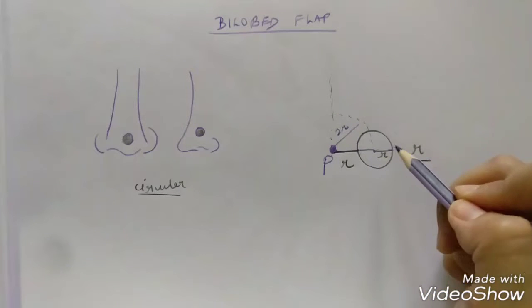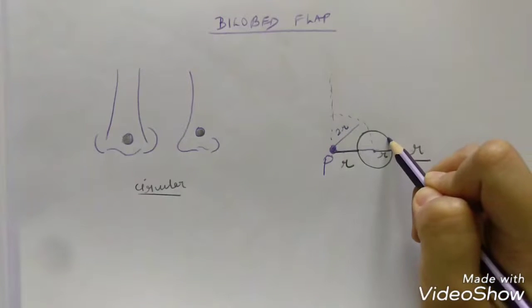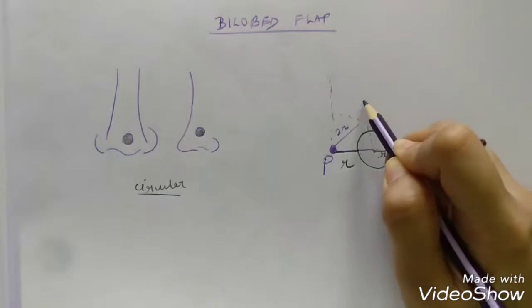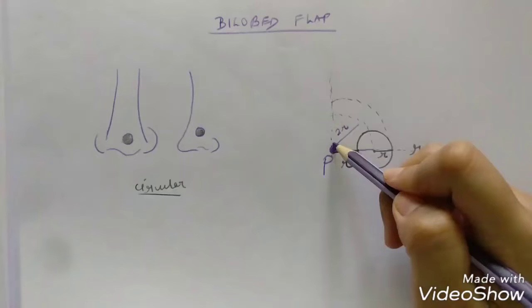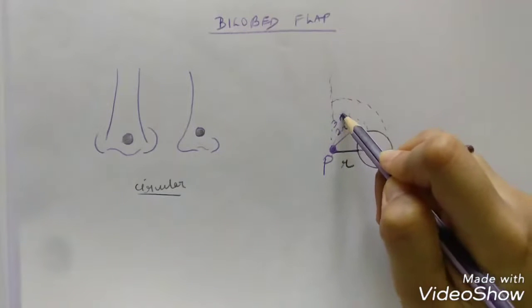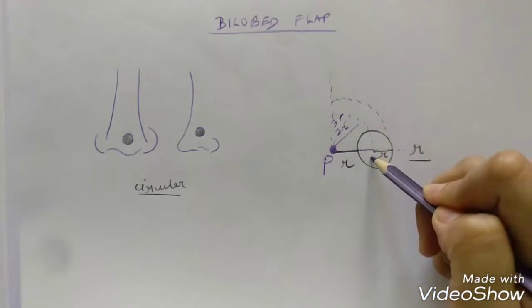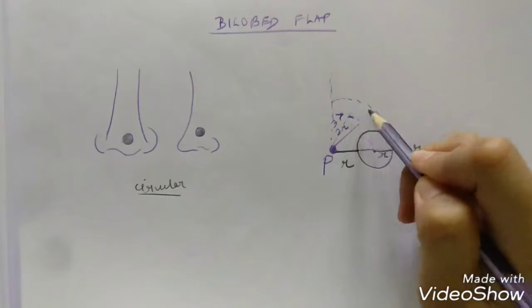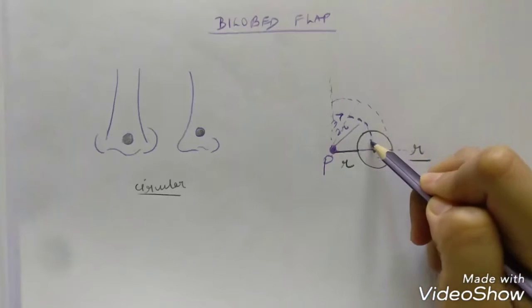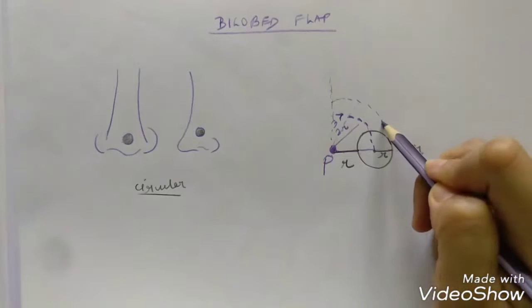The second concentric circle is drawn at a distance of 3R from the defect beginning from the pivot point. So this would ultimately be 3R. These concentric lines are important because it is within these lines that the two flaps that we have to mark will lie.